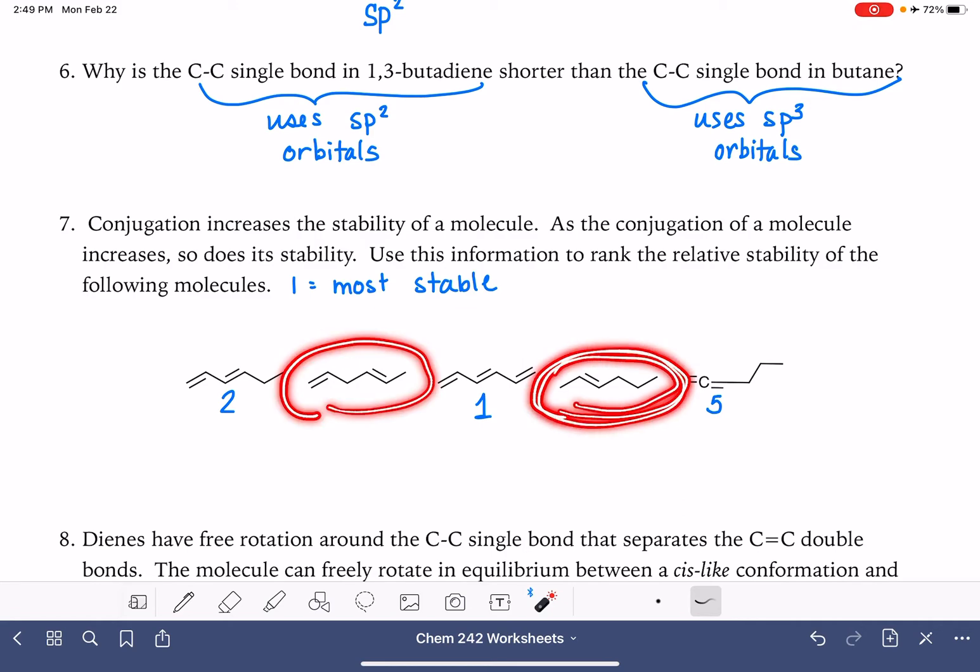These two molecules are just regular alkenes. This is just a regular alkene over here. This is a diene, but it's an isolated diene, meaning that there is more than one single bond separating the double bonds. And these molecules behave just like regular alkenes. This one is a regular alkene.